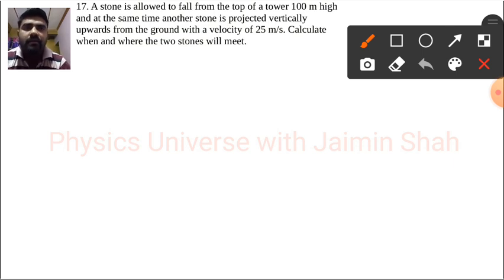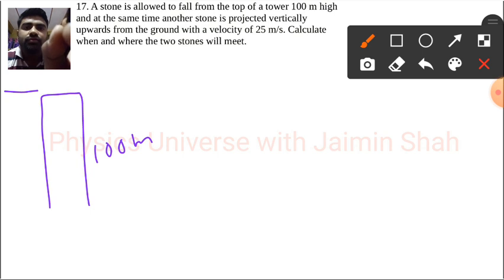So for example, here we are having a building 100 meters high. At the same time, one stone drops downward and another stone we throw upward with velocity.